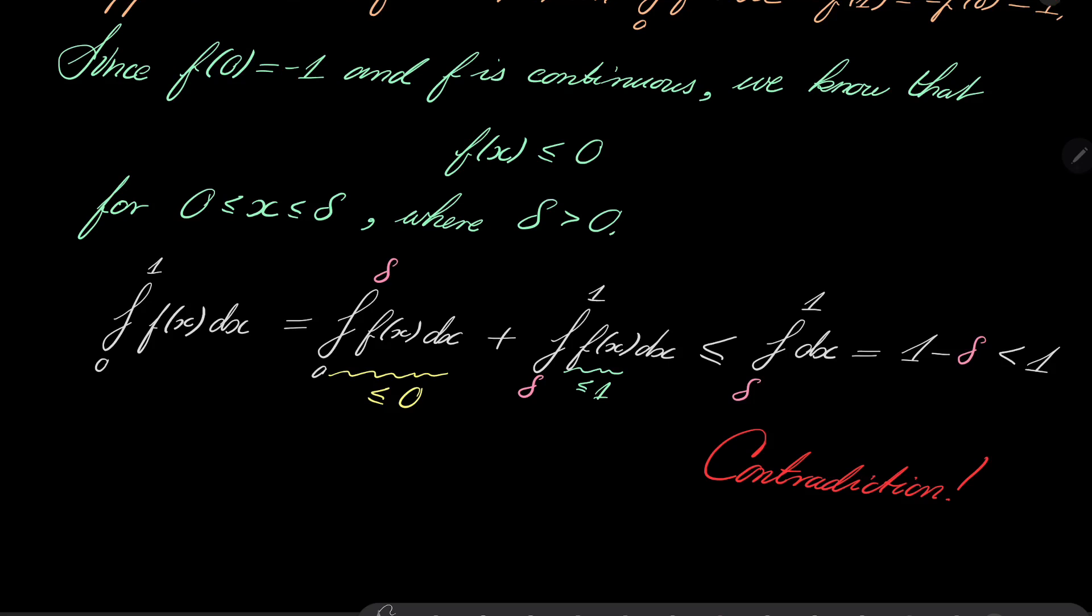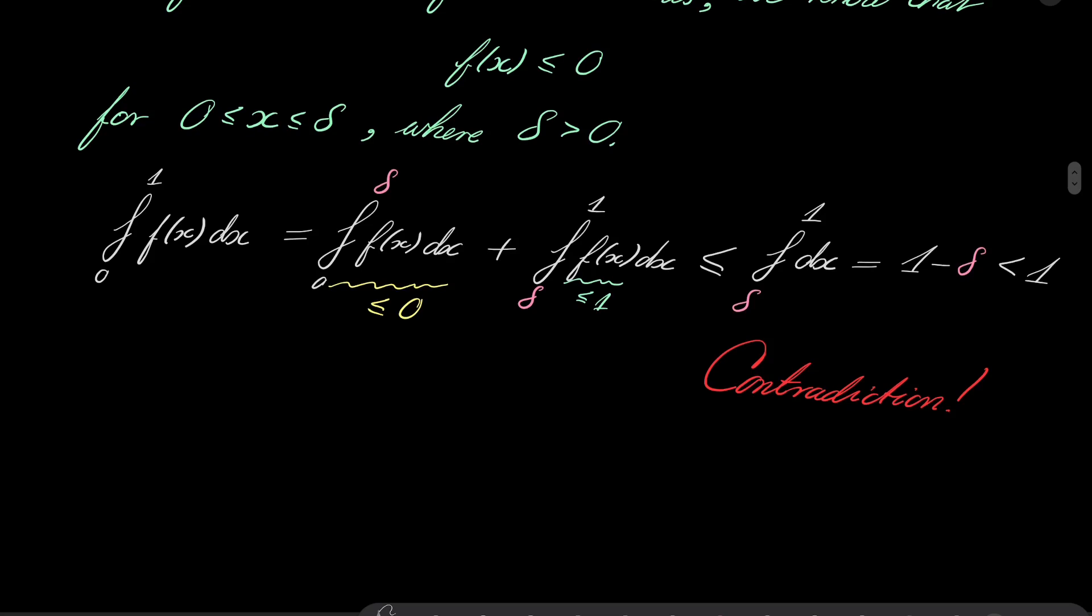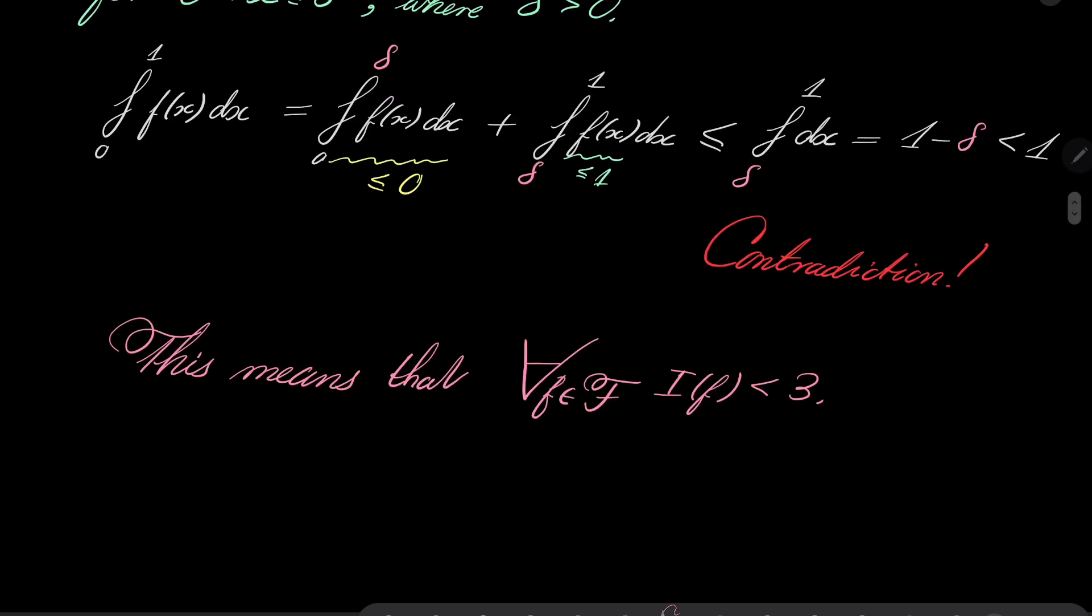Now we reach a contradiction. So which means this means that we have something stronger: for every function f in our family, I(f) is strictly less than 3, which is exactly what we wanted to prove in part a. This closes part a.